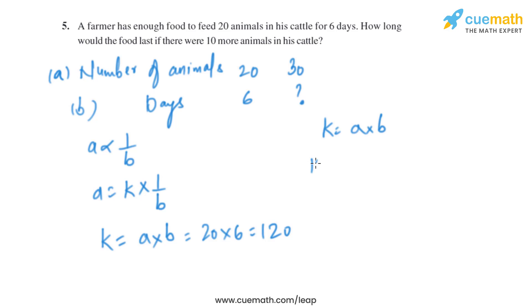So k equals to a multiplied by b, and k we have got 120. A is given number of animals 30, and we can find b from here, which is 120 divided by 30, which is same as 4. So when the number of animals are 30, the number of days food will last is 4.